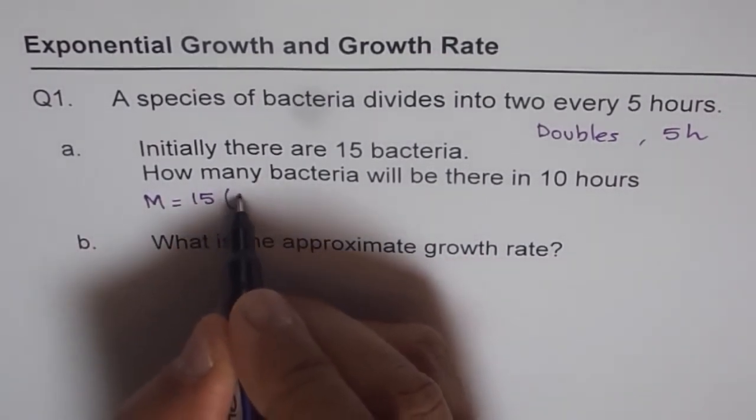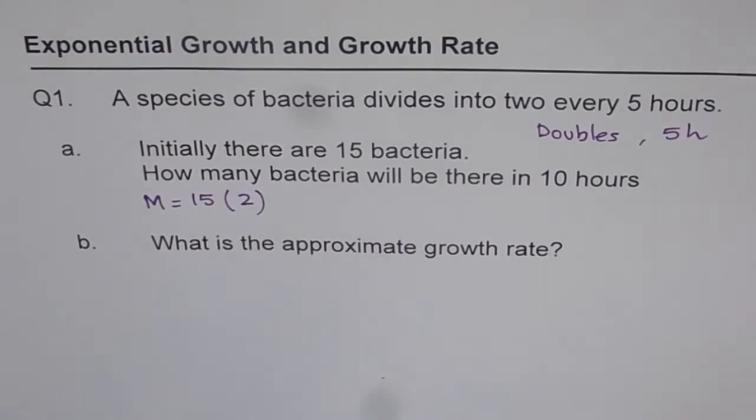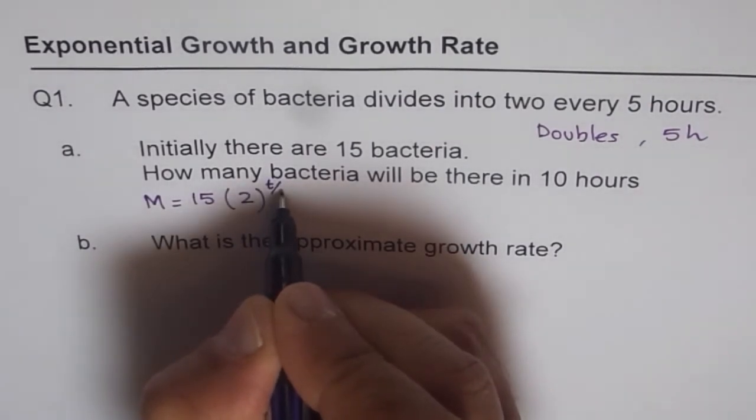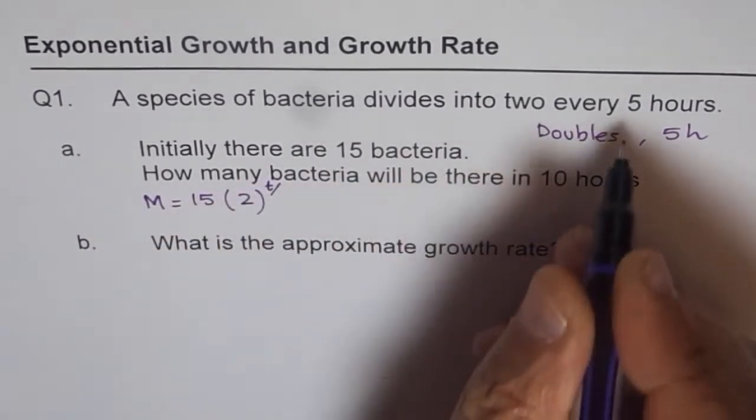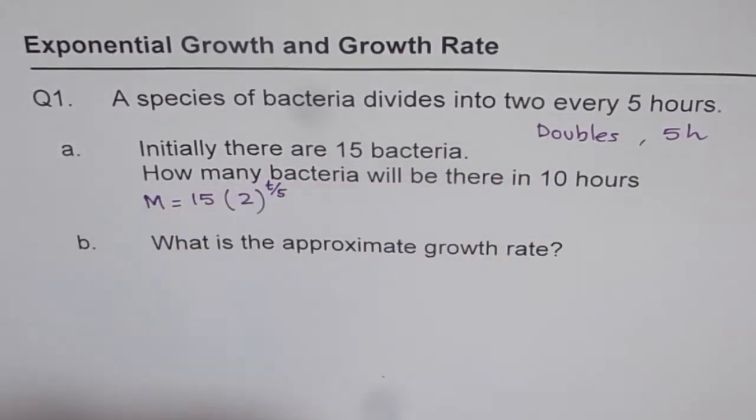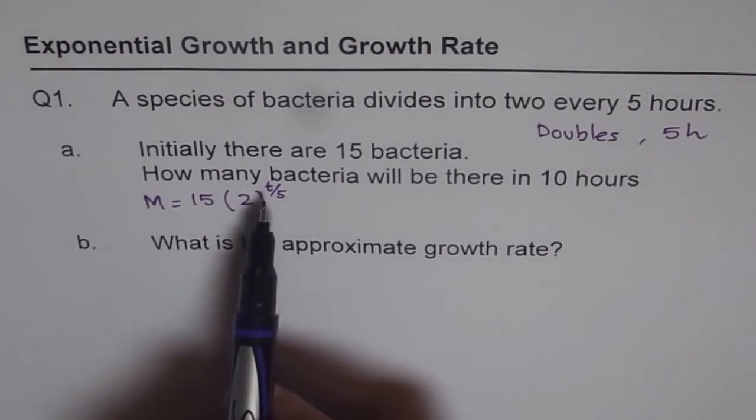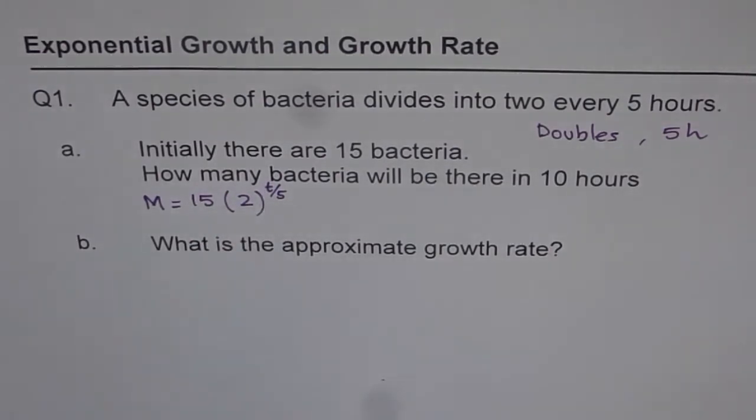So we will write 2 as a factor by which they are multiplying over T over doubling rate, which is 5 hours. So that is what it is. Now in this equation, M is number of bacteria and T is time in hours. Now we will substitute the values and then find out the answer.